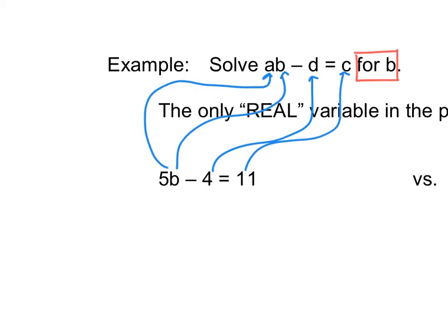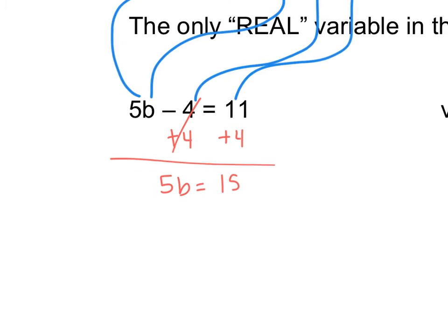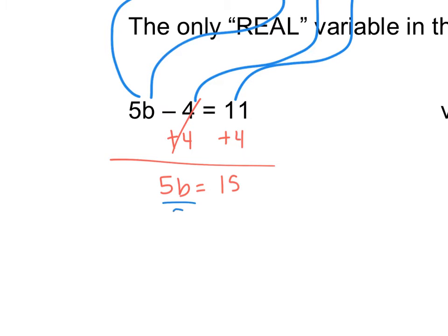We know how to solve 5B minus 4 equals 11. We know that we have to add 4 to both sides. Our 4s cancel, so we have 5B equals 15. And then we divide both sides by 5 to get B equals 3. And that's your final answer.